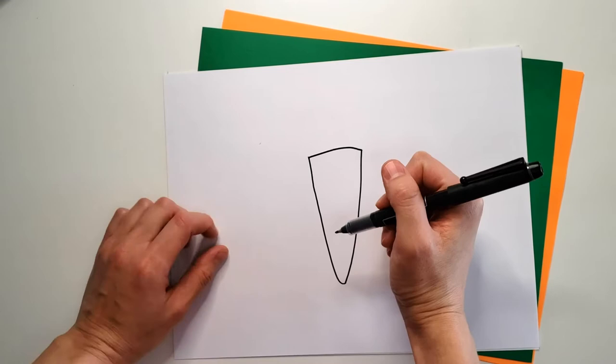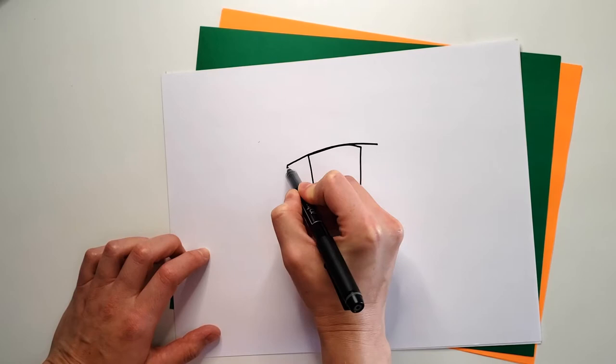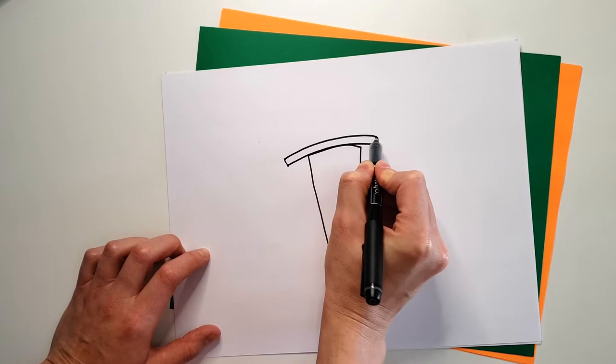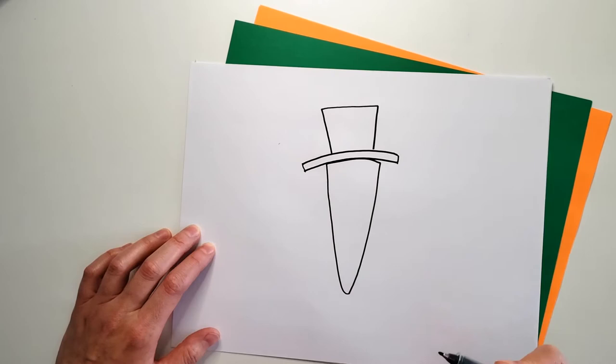Now this carrot is super fancy so it's going to need a top hat. So we're going to draw a long line like this and then two little lines. This is going to be the brim of our top hat, and then big long line like this, a line like this, and one final third line like that.